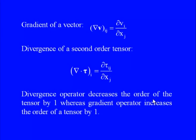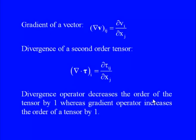When the del operator is applied to a vector v, it produces the gradient of the vector: (∇v)_ij = ∂v_i/∂x_j, which is a second-order tensor. The divergence of a second-order tensor tau gives a vector whose ith component is ∂τ_ij/∂x_j, with summation implied over j. Key observation: the divergence operator decreases tensor order by 1, while the gradient operator increases it by 1.